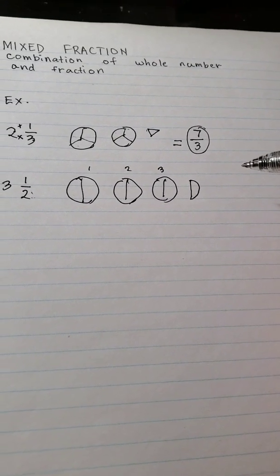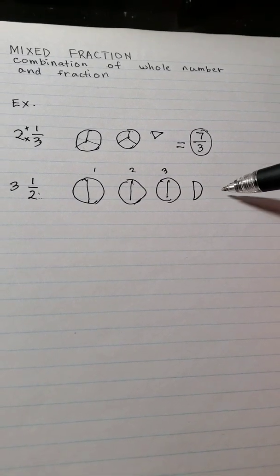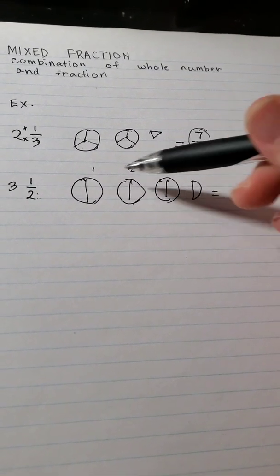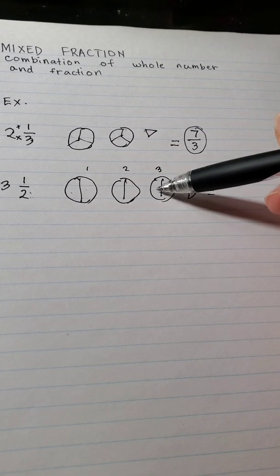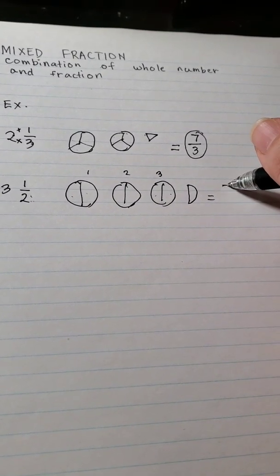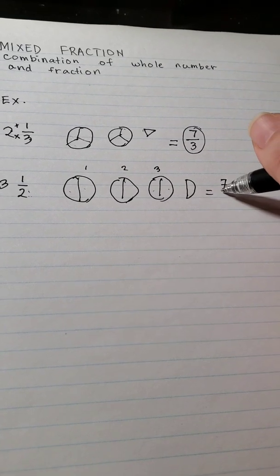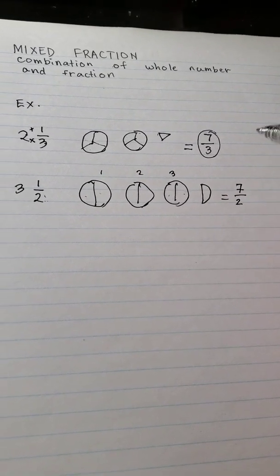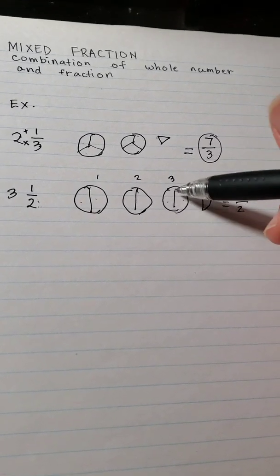And now we count all the parts or the slices. And that equals to 1, 2, 3, 4, 5, 6, 7. So the answer is 7 over 2 because it's divided into 2 parts.